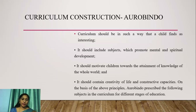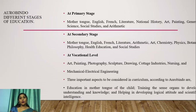On the basis of these principles, Aurobindo prescribed specific subjects at different stages of education. At the primary stage, he advocated mother tongue, English, French, literature, national history, art, painting, general science, social science and arithmetic. At the secondary stage, much focus should be given to mother tongue, English, French, literature, arithmetic, art, chemistry, physics, botany, philosophy, health education and social studies.